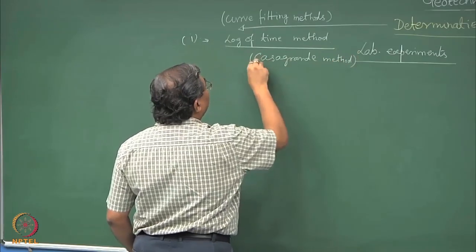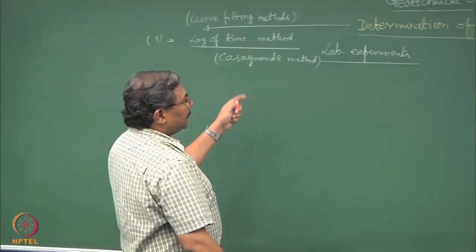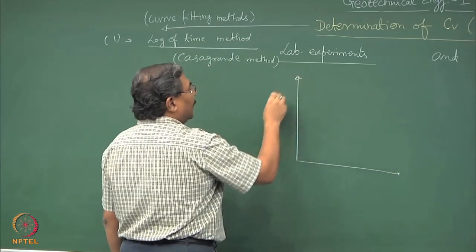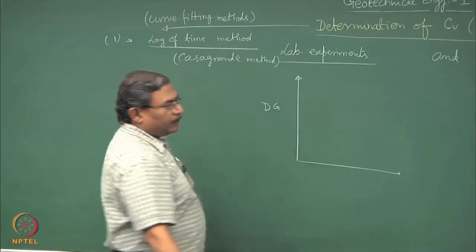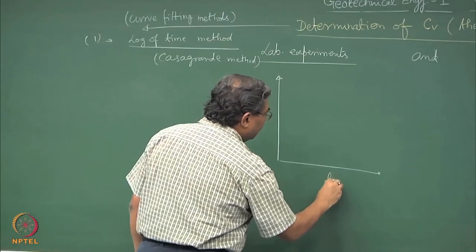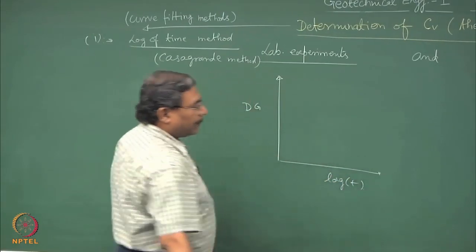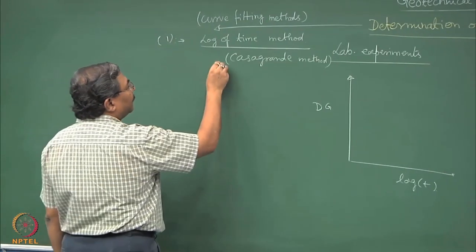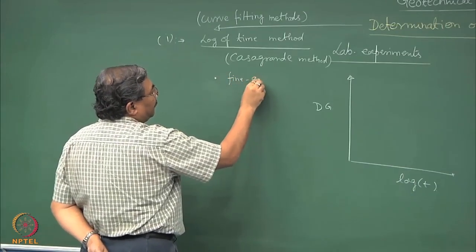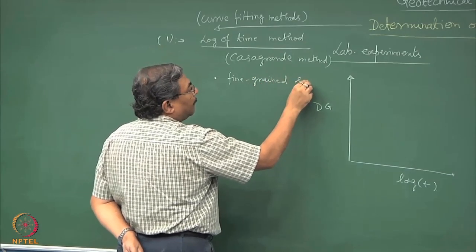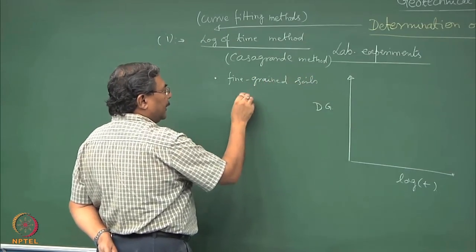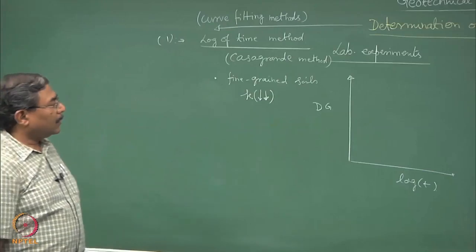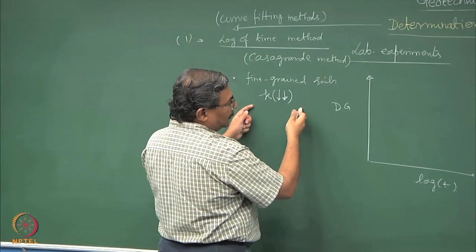As per Casagrande's method, in laboratory experiments, the results are plotted as a function of dial gauge readings with log of time. Why log of time? Because this method is normally used for fine-grained soils for which k is extremely small, and hence it takes a lot of time for the soil mass to consolidate. That is the reason we plot it on a log scale.